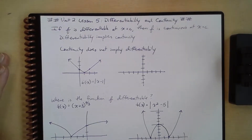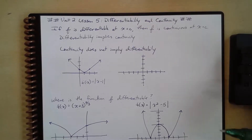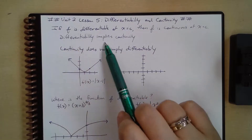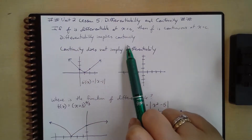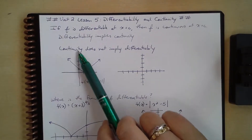When we talk about continuity and derivatives, we have a definition about differentiability and continuity. It says if f is differentiable at x equals c, then f is continuous at x equals c. So basically, differentiability implies continuity. But in the opposite way, continuity does not imply differentiability.